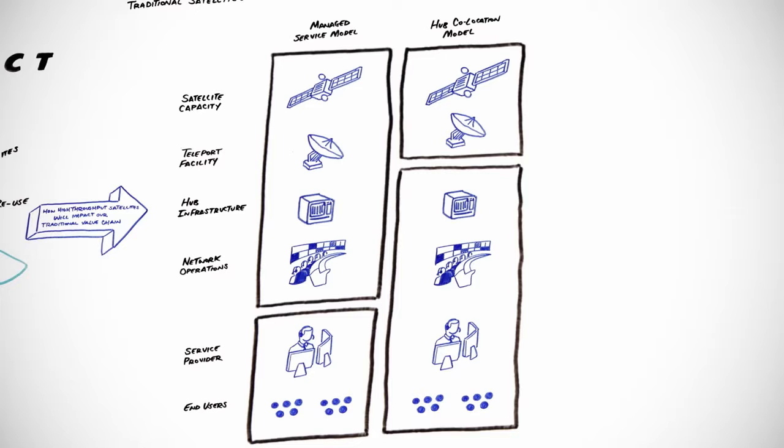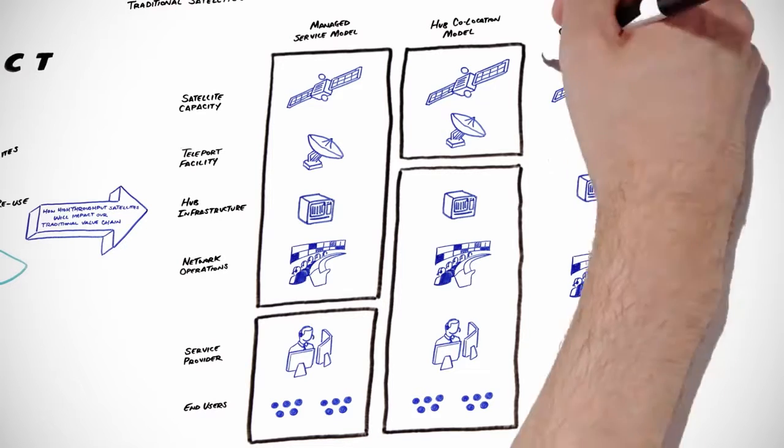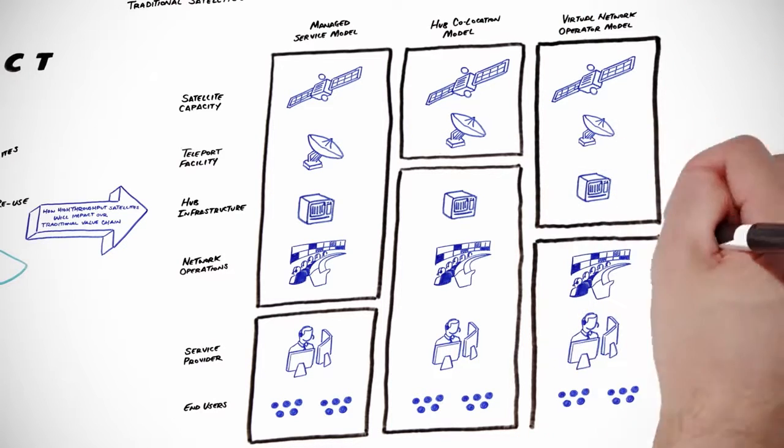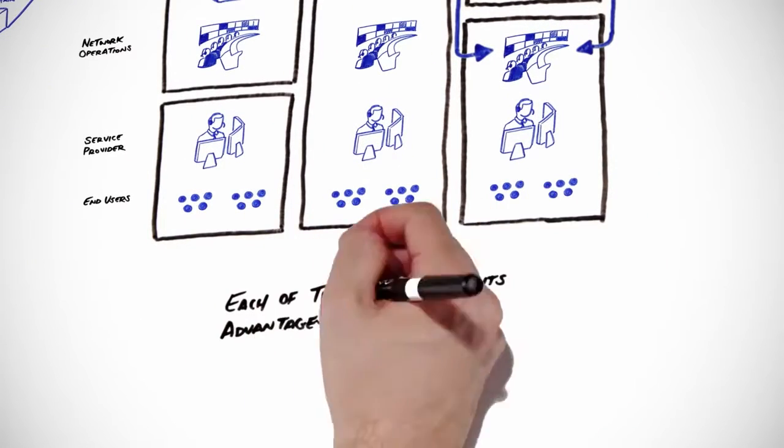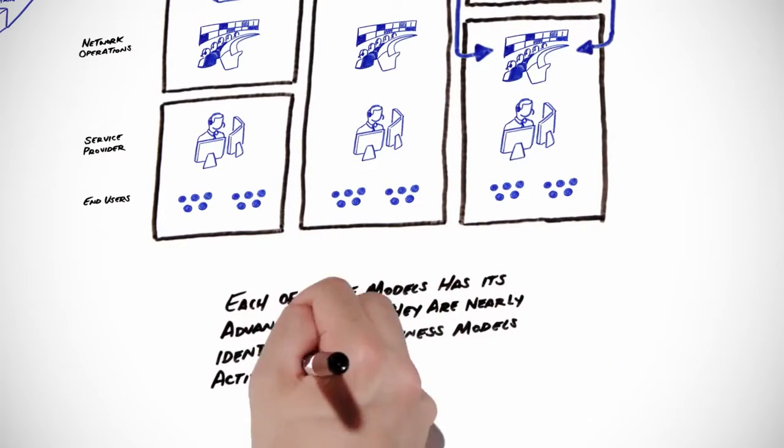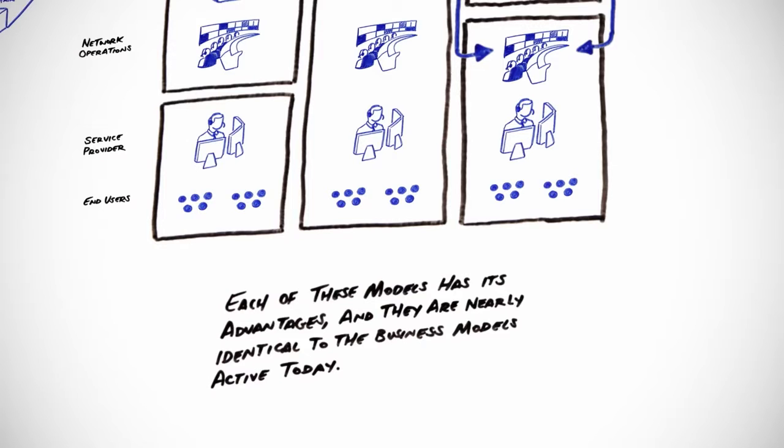Other satellite operators have chosen to offer a virtual network operator model, where service providers lease hub infrastructure space and only need to invest in line carts. Each of these models has its advantages, and they're nearly identical to the business models active today.